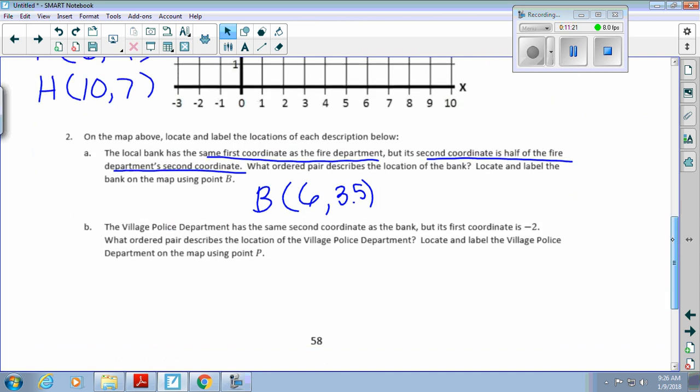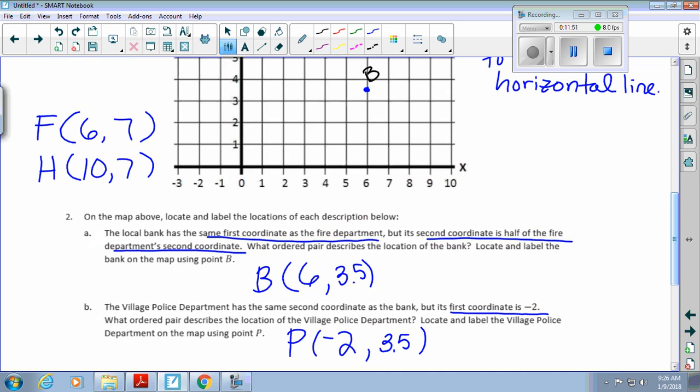Let's go ahead and do the next one, which is the police department. We're going to label this P. The village police department has the same second coordinate as the bank, so its Y coordinate is going to also be 3.5. Its first coordinate is negative 2. Let's go ahead and label that. Negative 2, 3.5. Go to the left 2, start at the origin, and then go up to 3.5.